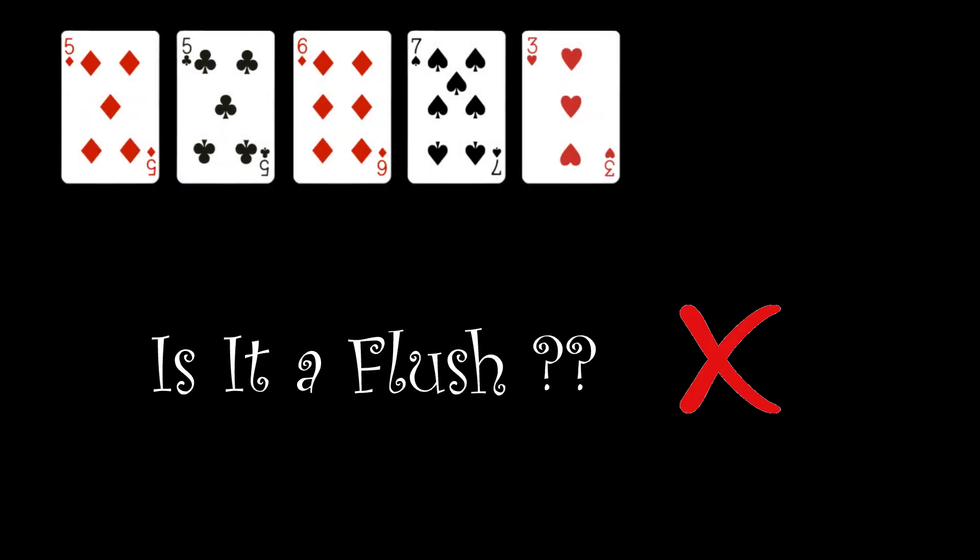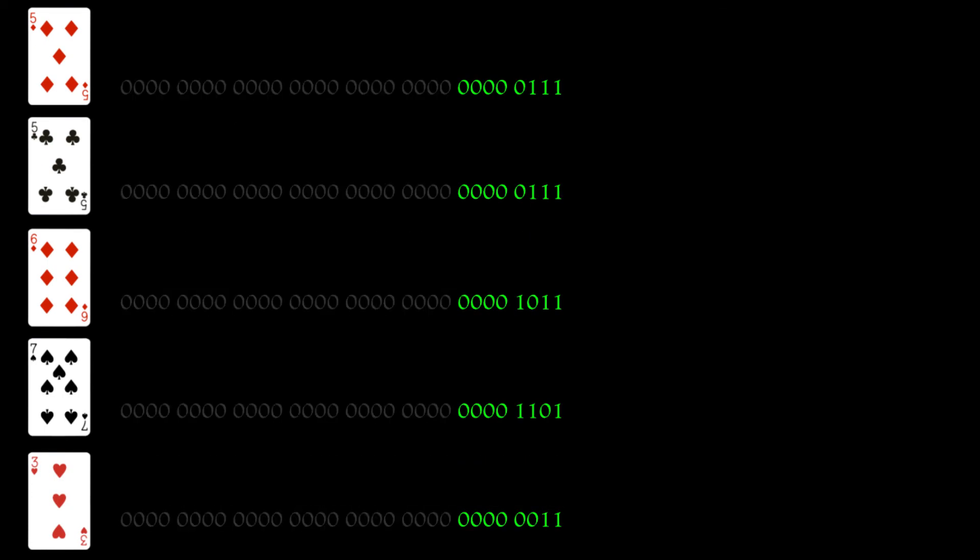Our example now will again, of course, fail the flush and unique five checks, so we extract the prime product, and that gives us the hand card ranking.